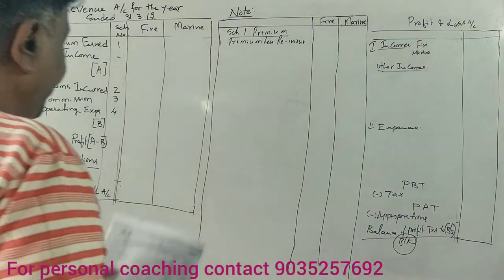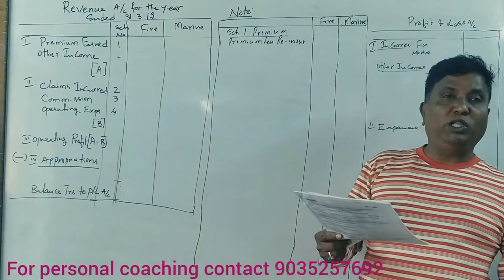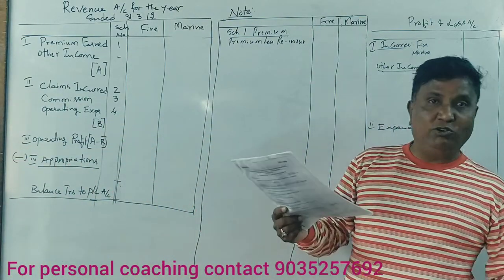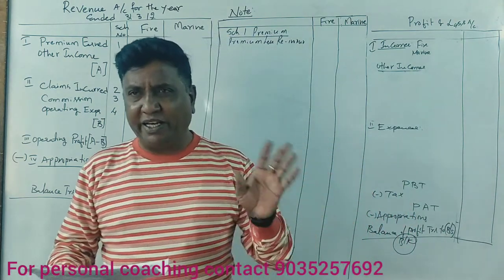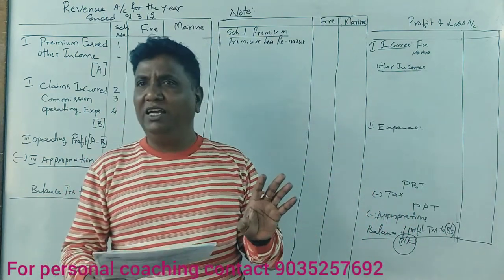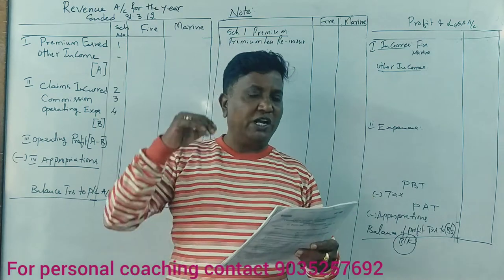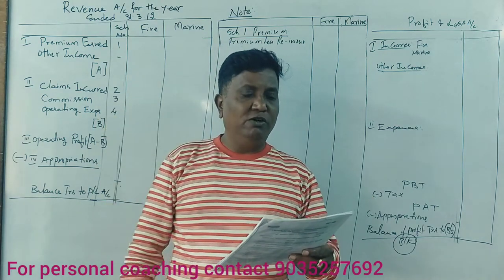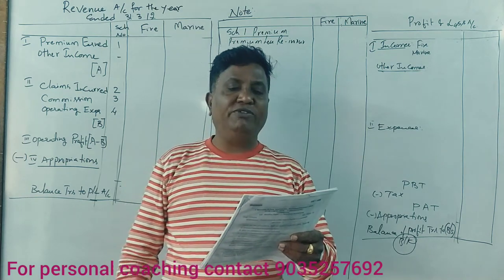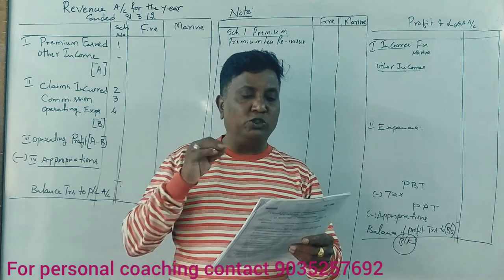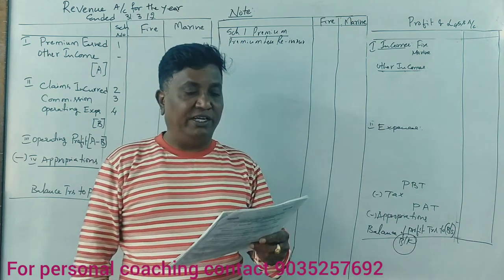Guys, this is from the 2015 question paper and 2018 question paper. So, accounts for general insurance companies. Following balances are extracted from the books of United Insurance Company Limited as on 31st March 2015.